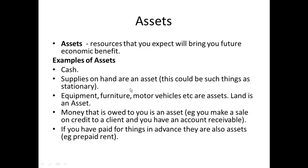It is important to know each of the components of the accounting equation very well, and to master every account so you know what category it belongs to. Assets are resources that we expect will bring future economic benefits. Obvious examples include cash, supplies on hand — such as stationery, pens, pencils, and paper — equipment, furniture, and motor vehicles.